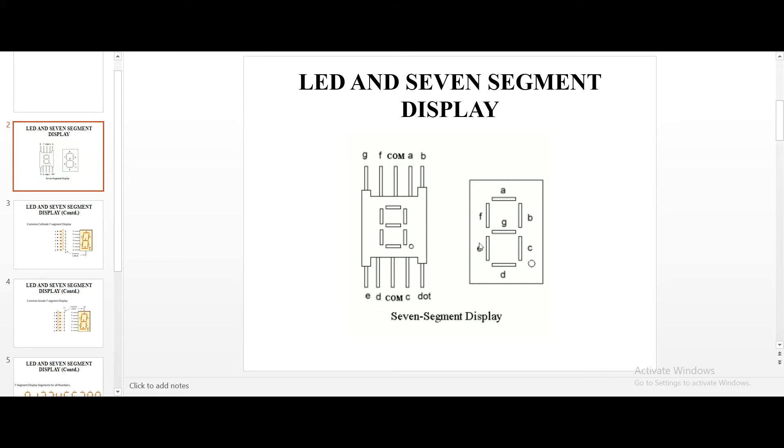Based on the segments we power, the digits appear. For example, if you are powering B and C, digit 1 appears. If you are sending signals except G, remaining all if you are sending ones, 0 will appear.